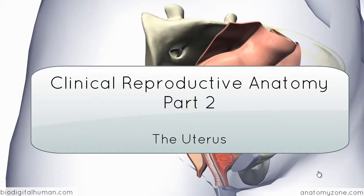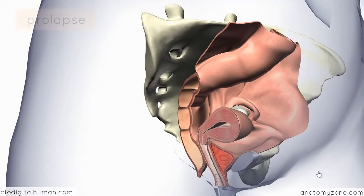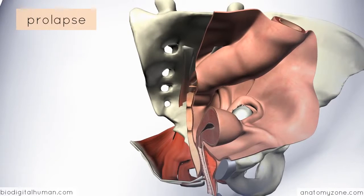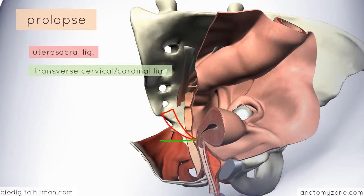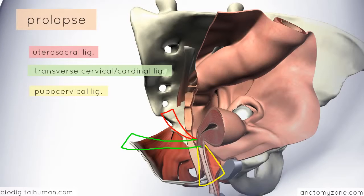Moving on to the uterus now, there are several things to talk about here. The first thing I'm going to mention is prolapse. If you remember some of the structures supporting the uterus, you've got the utero-sacral ligament attaching from the cervix to the sacrum, the transverse cervical ligament attaching to the sidewall, and the pubocervical ligament extending anteriorly. Together with the levator ani muscle, which forms the bulk of the floor of the pelvis, these structures support the uterus.